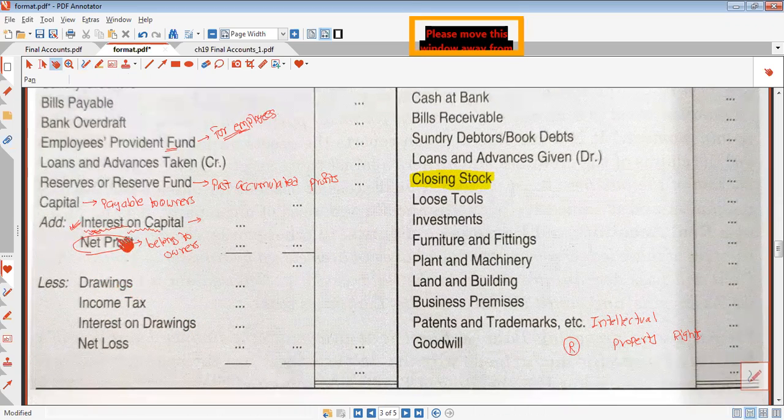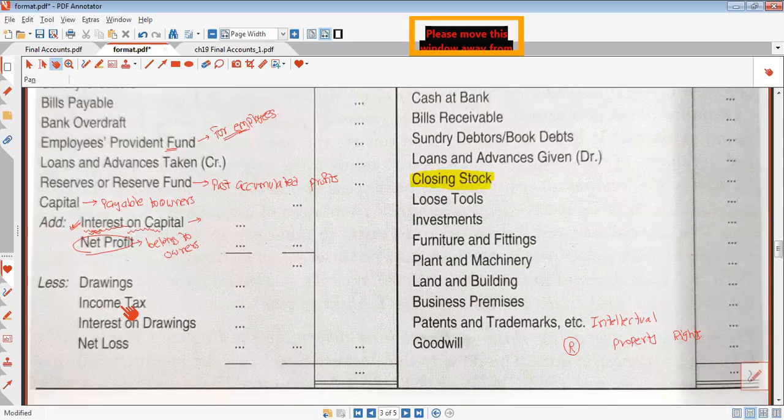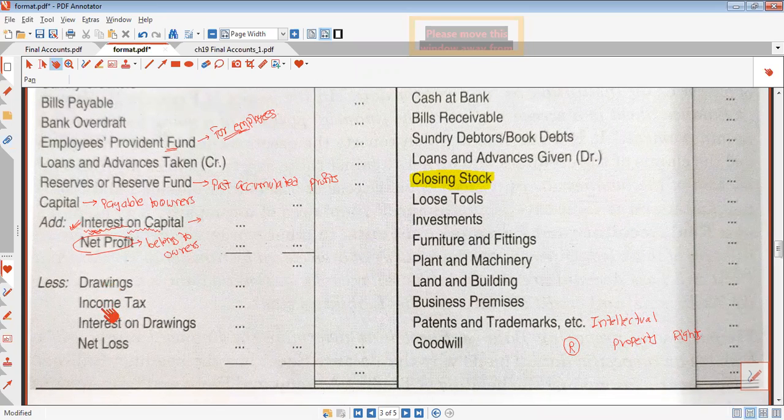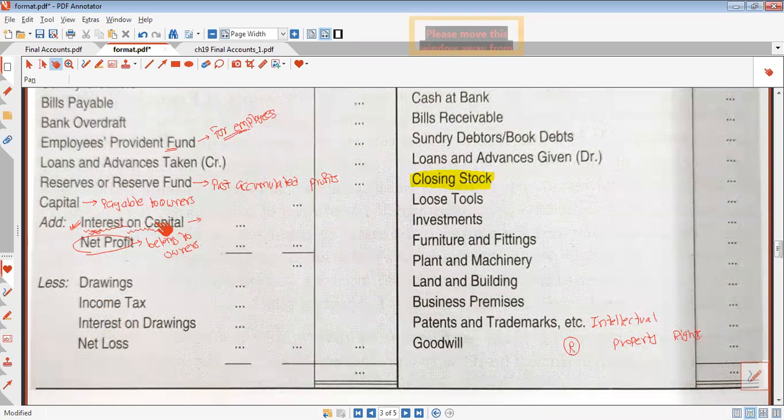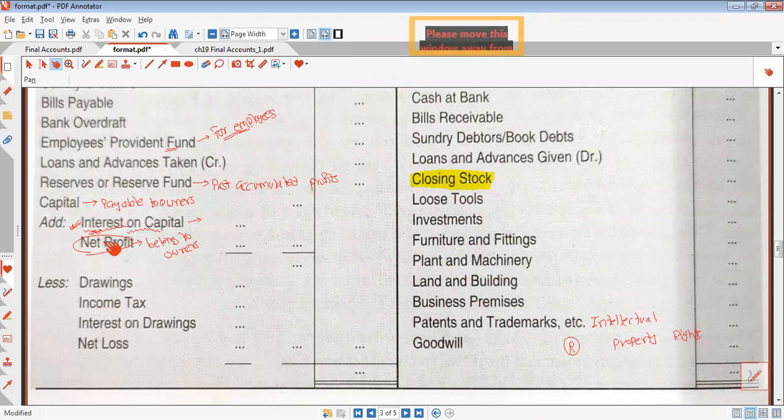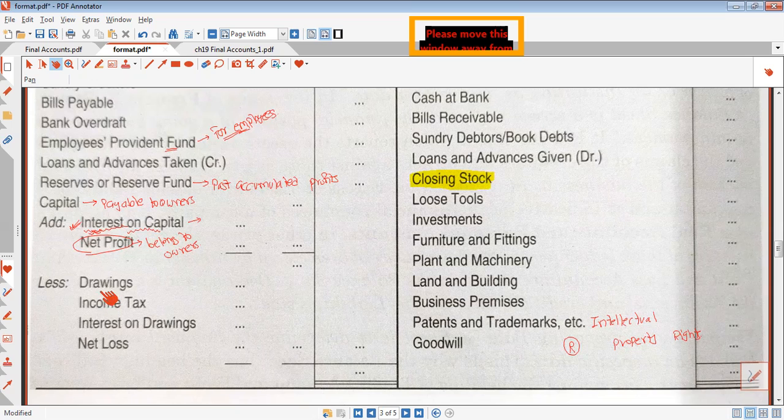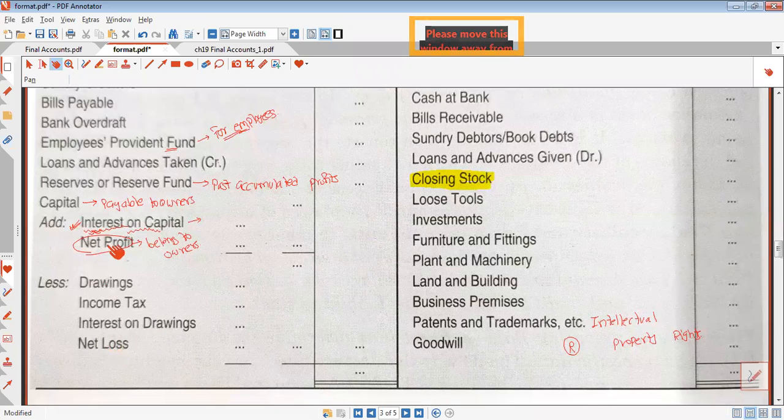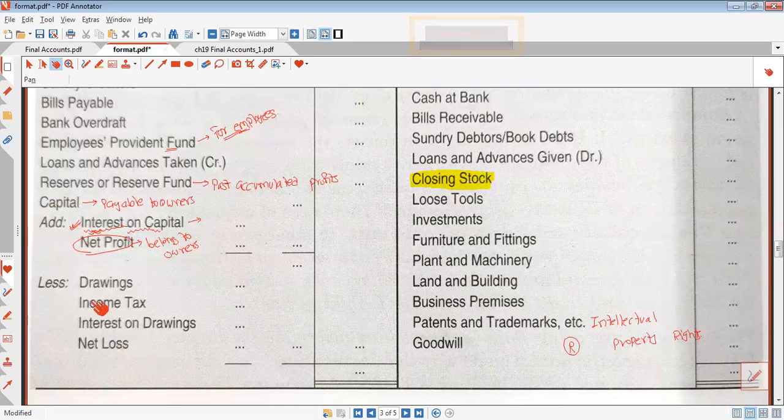Interest on capital is not compulsory but is possible. Any smart businessman will record interest on capital because only then you will know the real profitability. Interest should be earned in any business - profit is for risk-taking, but interest should be earned anyway. Finally, drawings - we already know it's the opposite of capital. Money withdrawn from business is deducted from capital. Income tax is a personal expense, so it reduces capital. It's actually one type of drawing. Interest on drawings is the reverse of interest on capital. Net profit is added, and net loss has to be deducted.